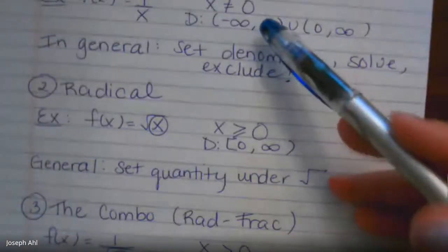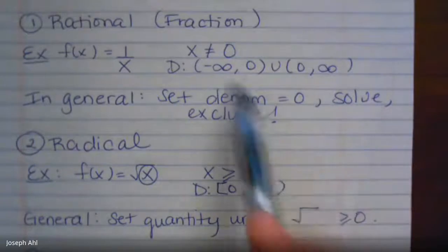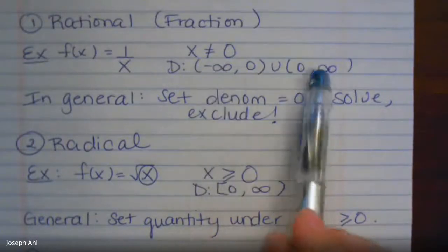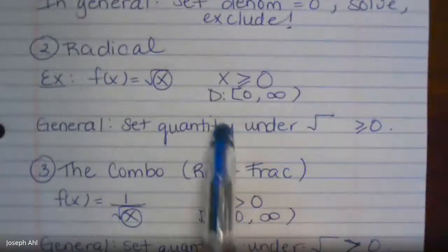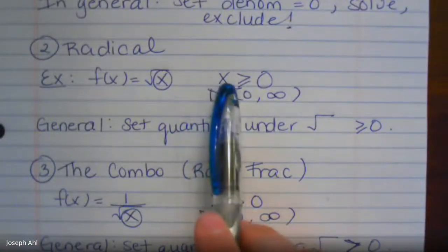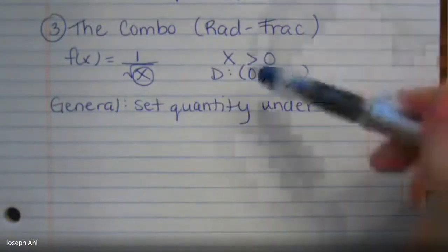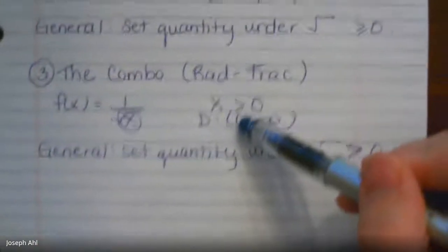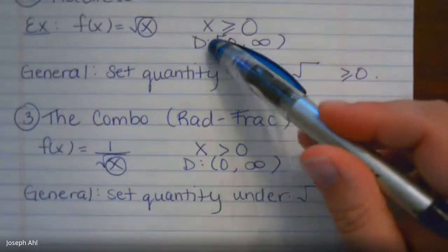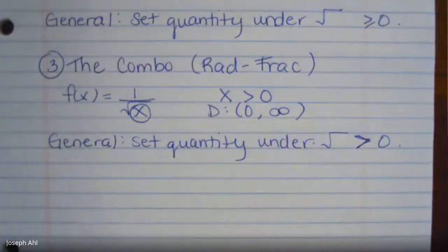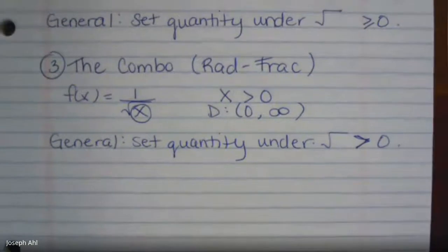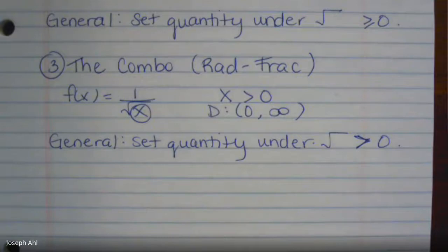To summarize the skills: for a fraction, set the bottom equal to zero and solve, then exclude those values from the domain. For an inequality with a radical, don't forget that dividing by a negative flips the sign. Make sure you separate the cases between setting the radicand greater than zero versus greater than or equal to zero. Now go to page 31 in your packet — it says Functions Day Five Domain Practice — and do those problems.